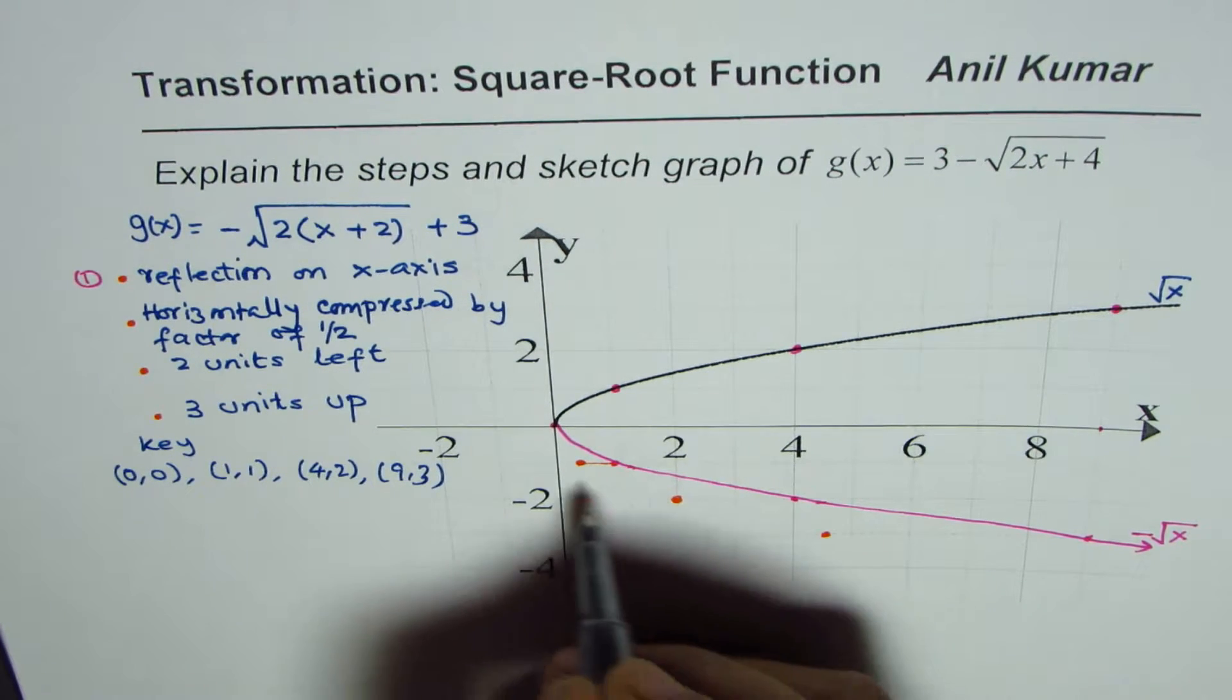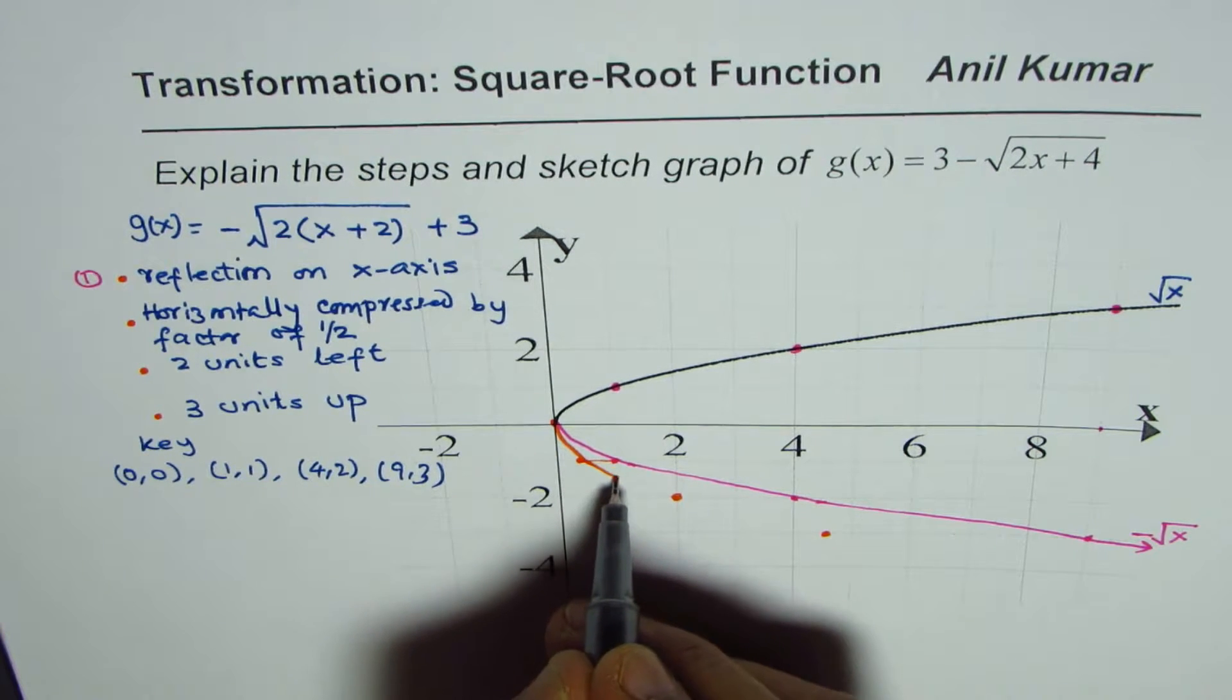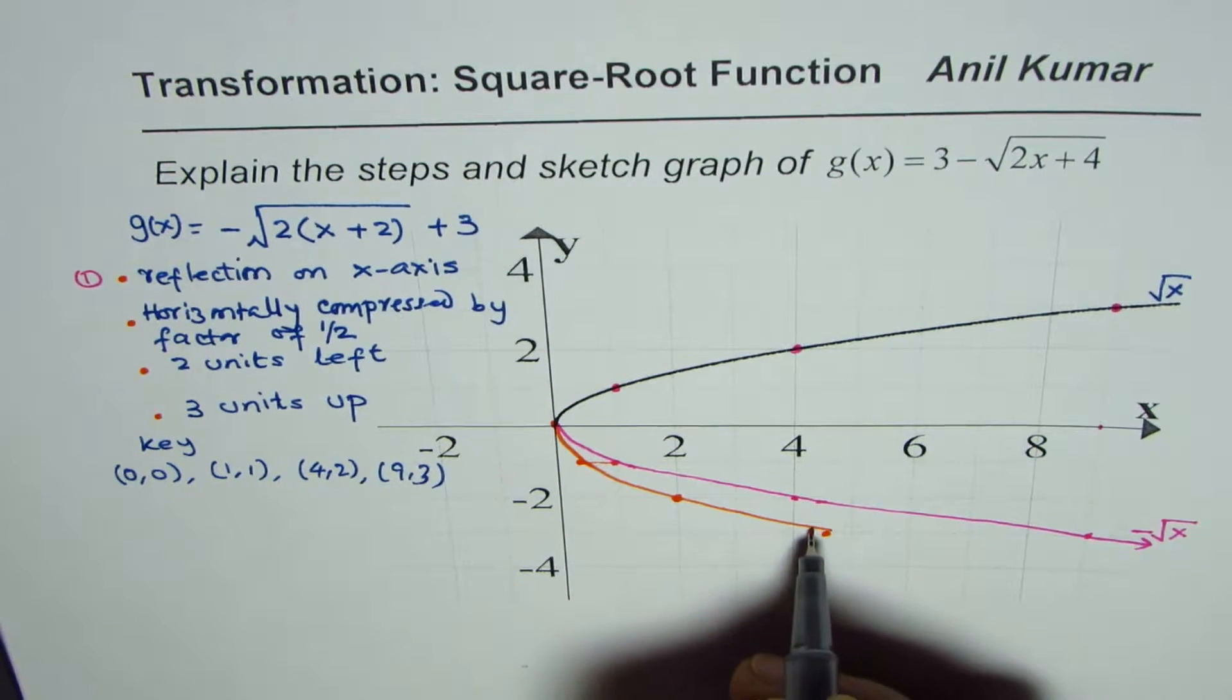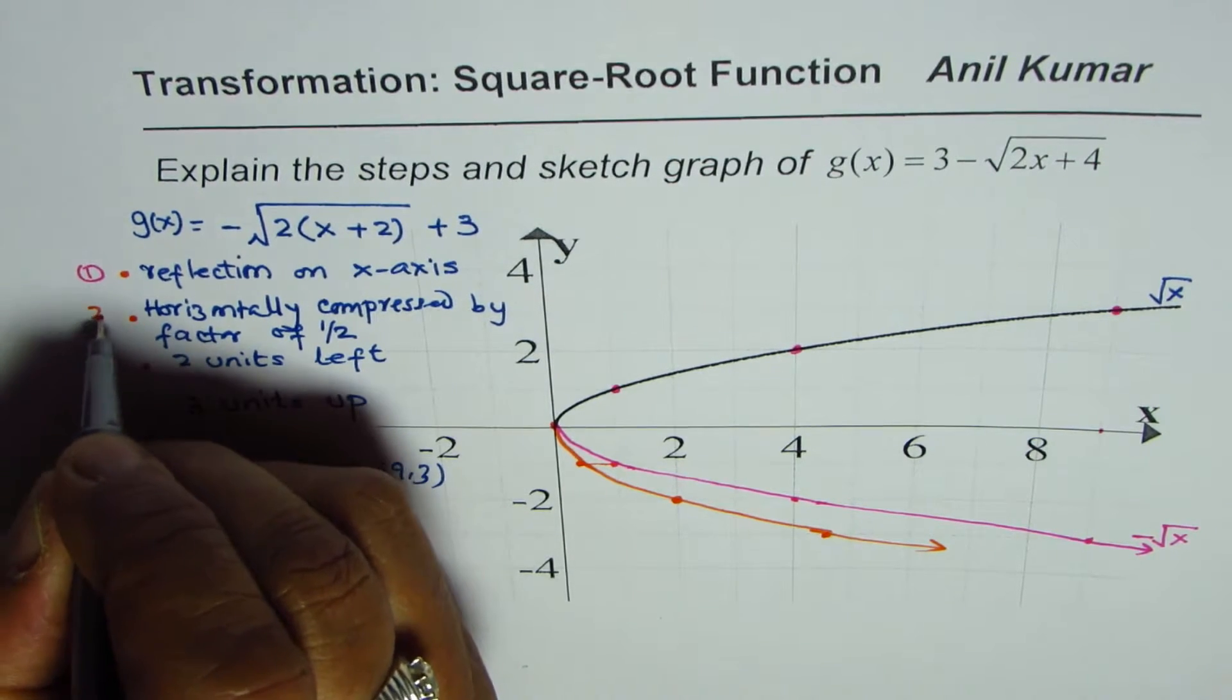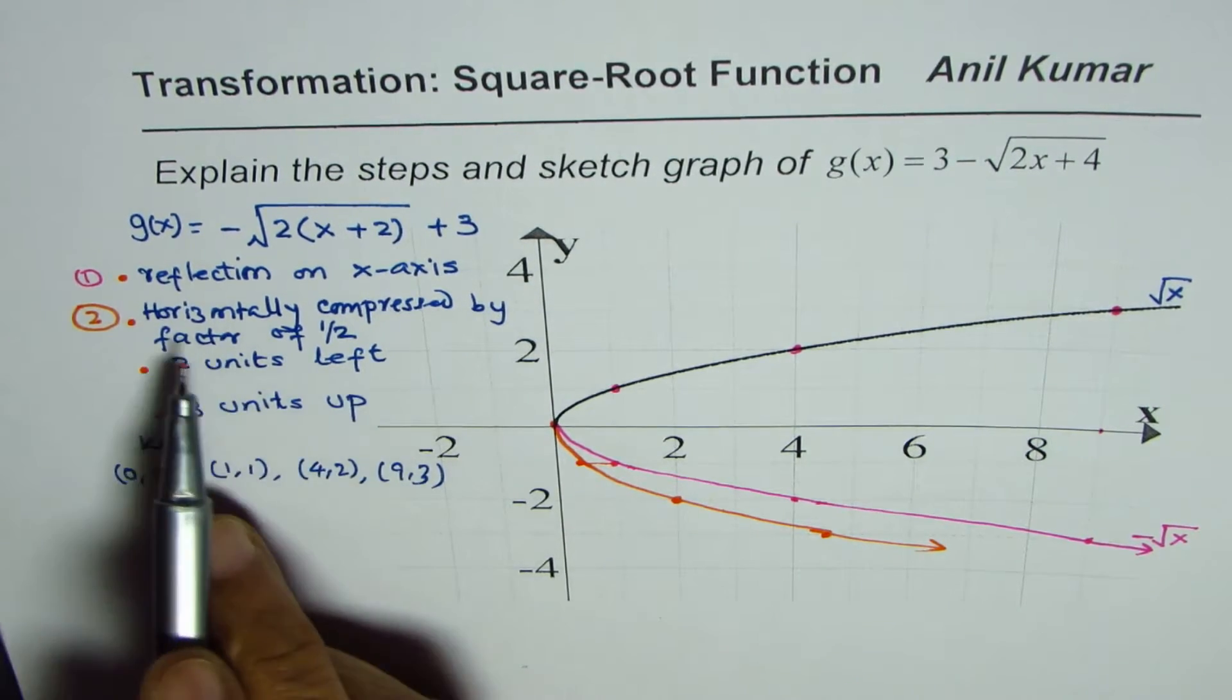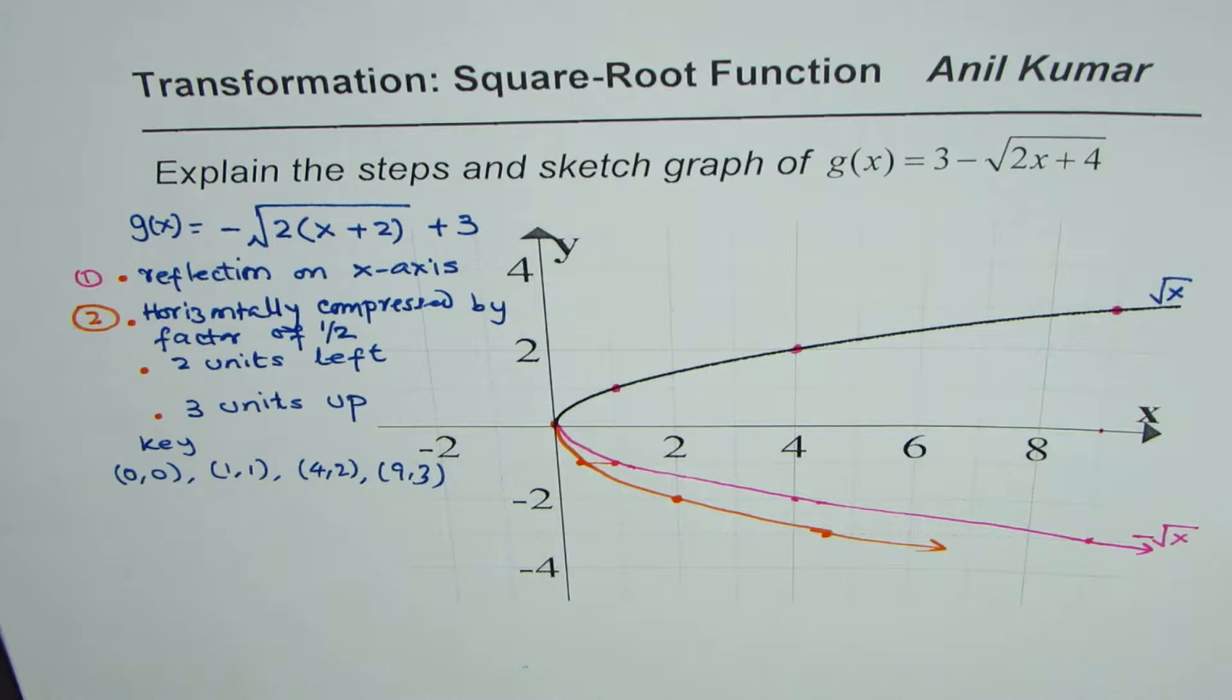So what we'll end up with is a graph which is kind of like this. Let me just sketch it like this. So we have done step number two, which incorporates horizontally compressed by a factor of half.